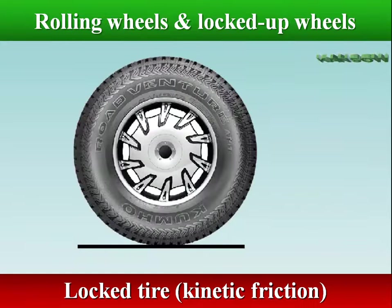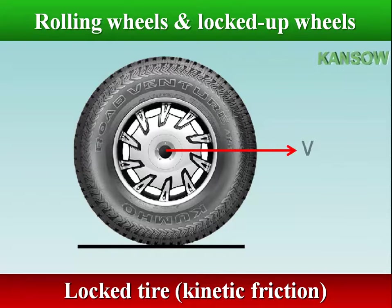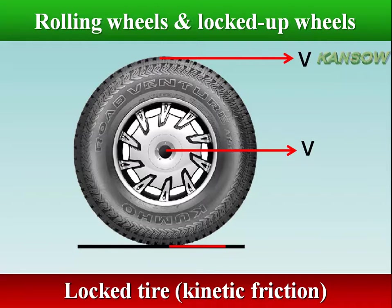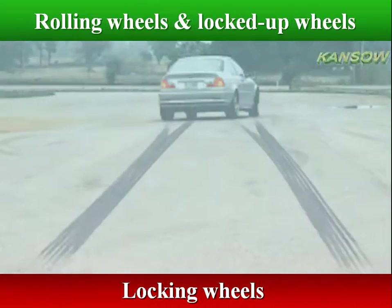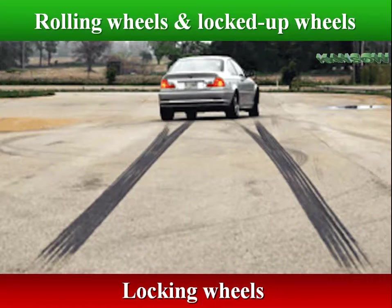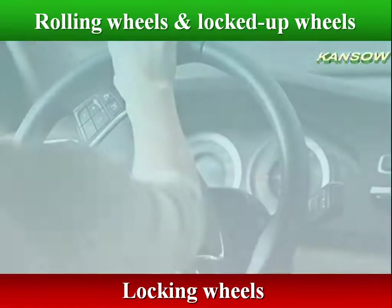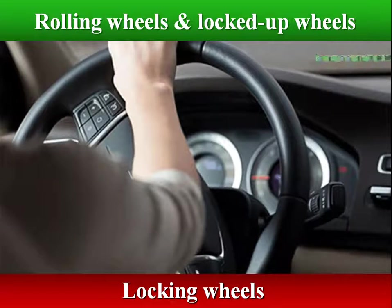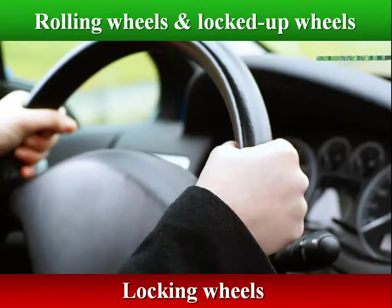The contact point of a locked tire is skidding on the road at the full velocity of the vehicle. Wheel lock-up during braking causes skidding, which in turn causes a loss of traction and vehicle control. This reduces the steering ability to change direction, so the car slides out of control.